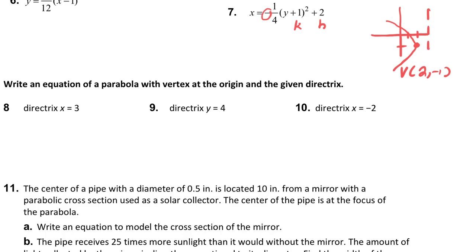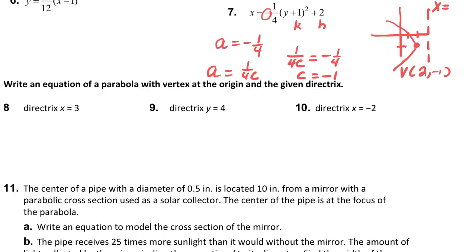So now we need to find the directrix and the focus. Our a value here is negative one over four, and the formula is one over four c. To do this algebraically, you have to set both equal to each other. For c to come out to be negative one fourth, it has to be negative one. Since the directrix is one unit away from the vertex, it's going to be x equals one. The vertex is two, negative one — so one unit away gives us focus at one, negative one. Our focus is one negative one, our vertex is two negative one, and our directrix is at x equals one.